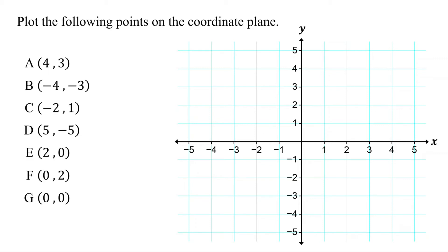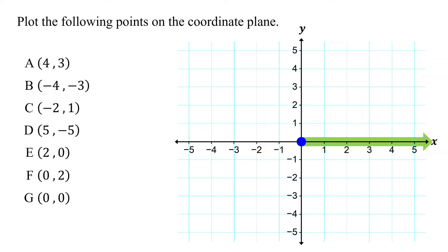In this lesson, you will learn how to plot a point on a coordinate plane. As a quick recap, a coordinate plane is made up of a horizontal number line called the x-axis and a vertical number line called the y-axis. The point where these axes intersect is called the origin, which is the center of the coordinate plane. On the x-axis, the region to the right of the origin is positive and to the left is negative. On the y-axis, the region above the origin is positive and below is negative.